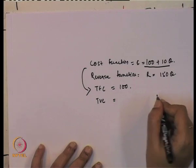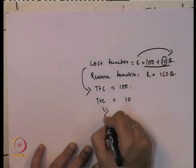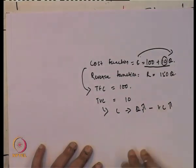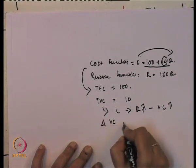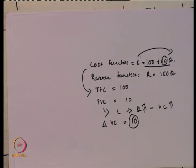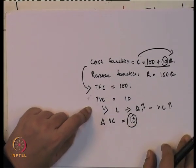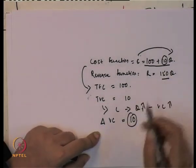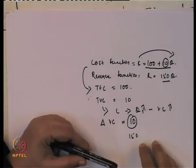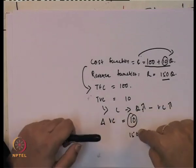The variable cost changes with respect to Q: fixed cost is constant at 100, and whenever there is a change in output, variable cost changes by 10 times that change — that is the rate at which variable cost changes. So total fixed cost is 100, and variable cost increases at a constant rate of 10 per unit as output increases. The revenue function implies that the market price for the product is 150 per unit of sale.